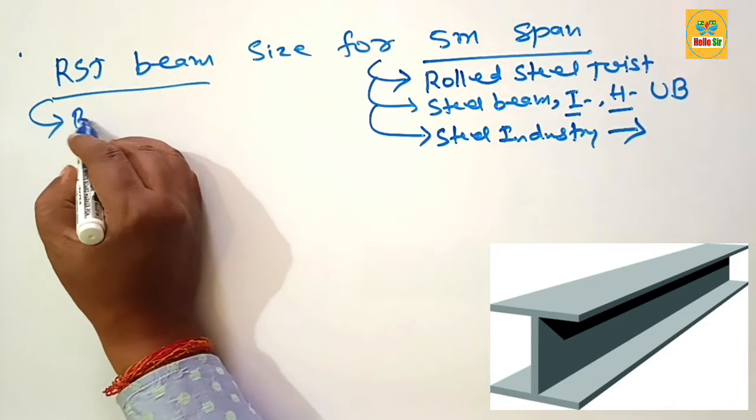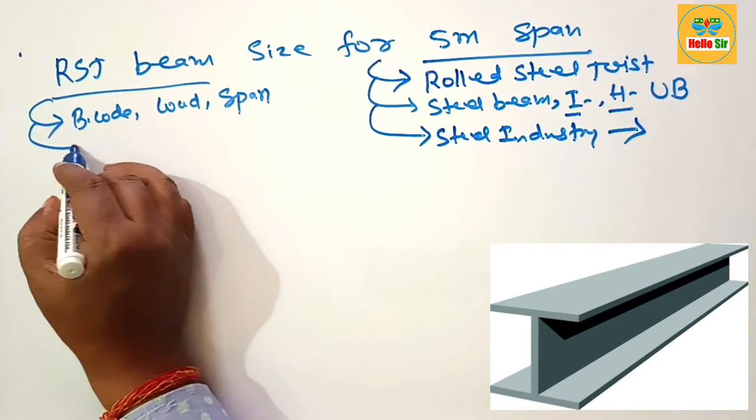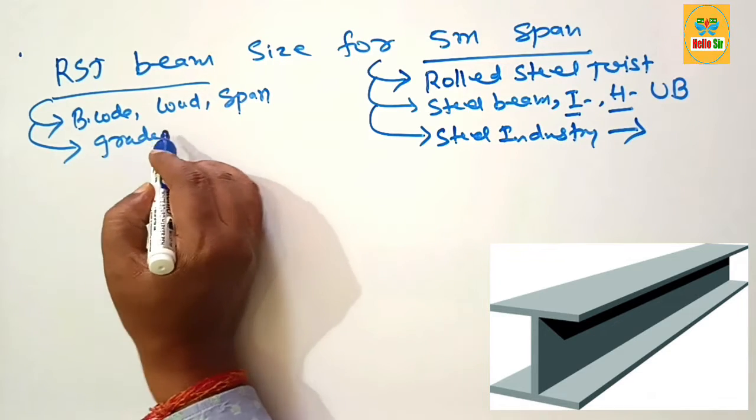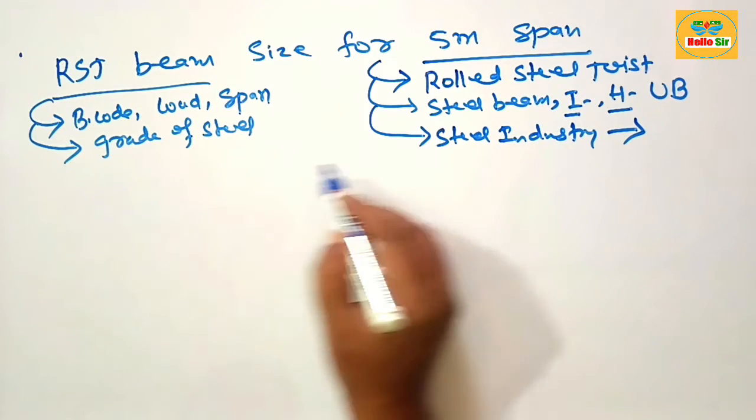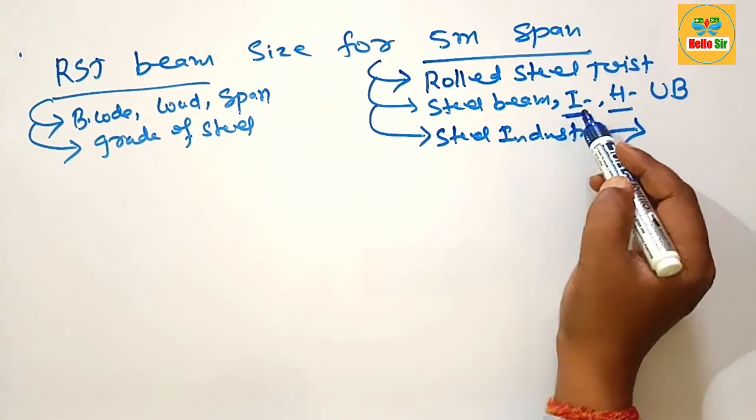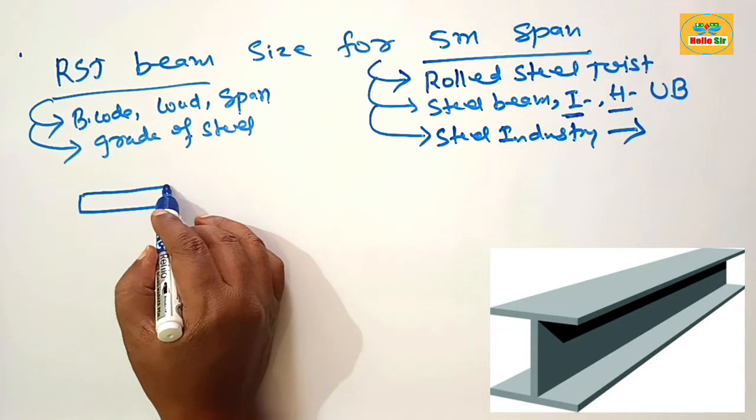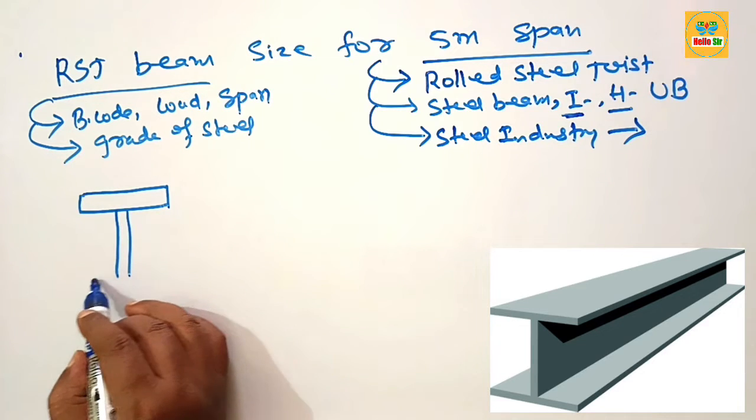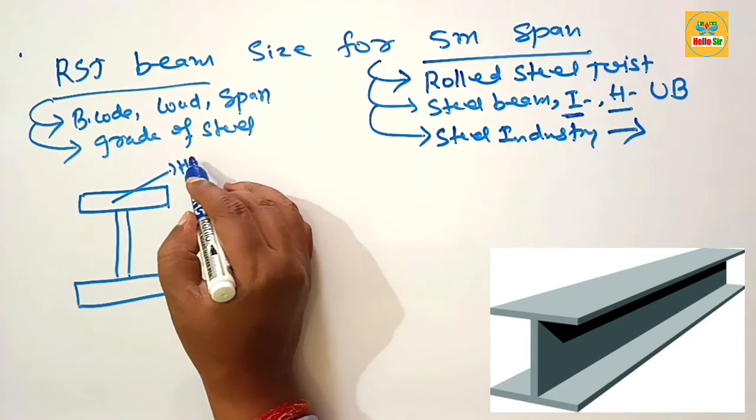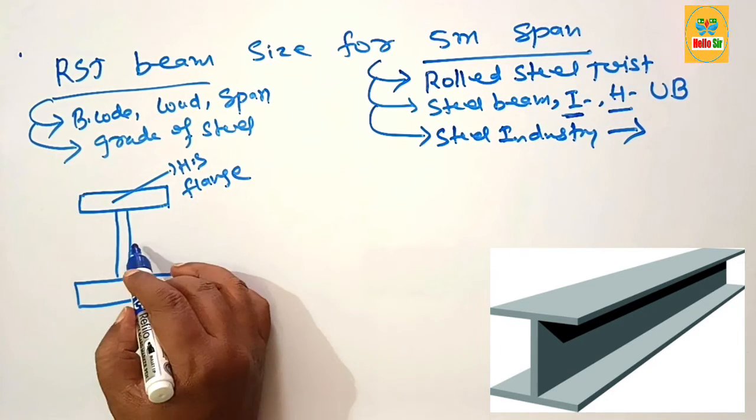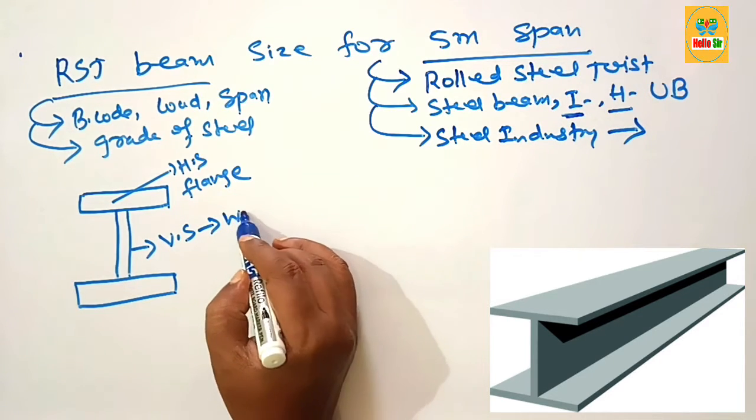First you understand about the dimension of RSJ beam size. Here you look like I beam. Here we make a rough diagram to understand about the different part of this RSJ beam. This one is rough diagram to understand. This one is horizontal section known as flange and this one is vertical section known as web.